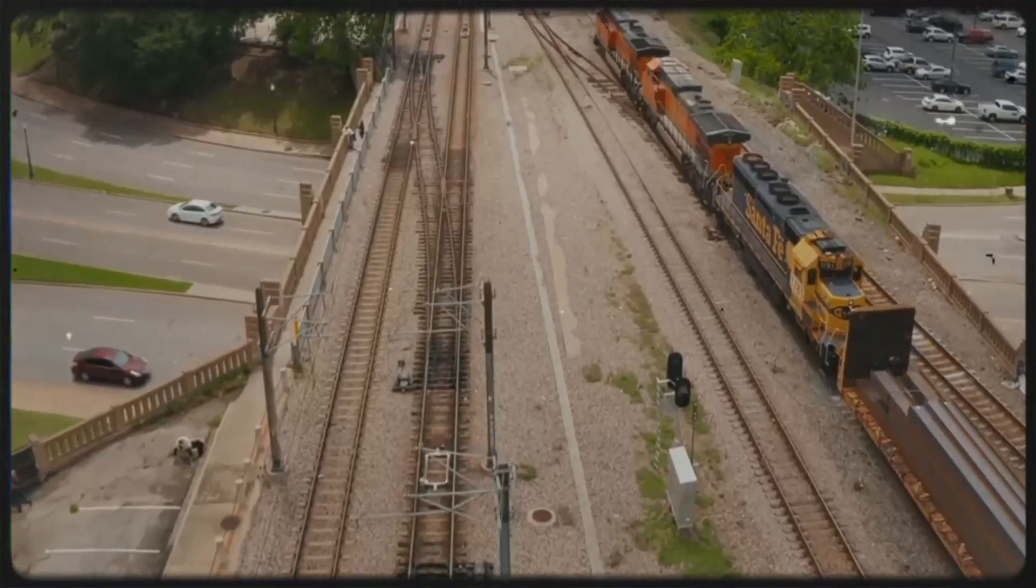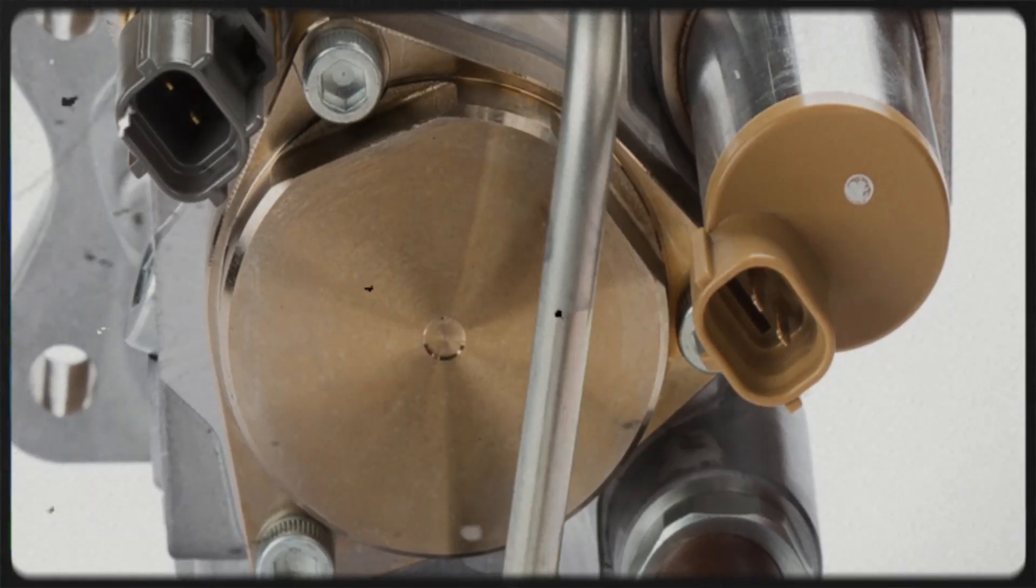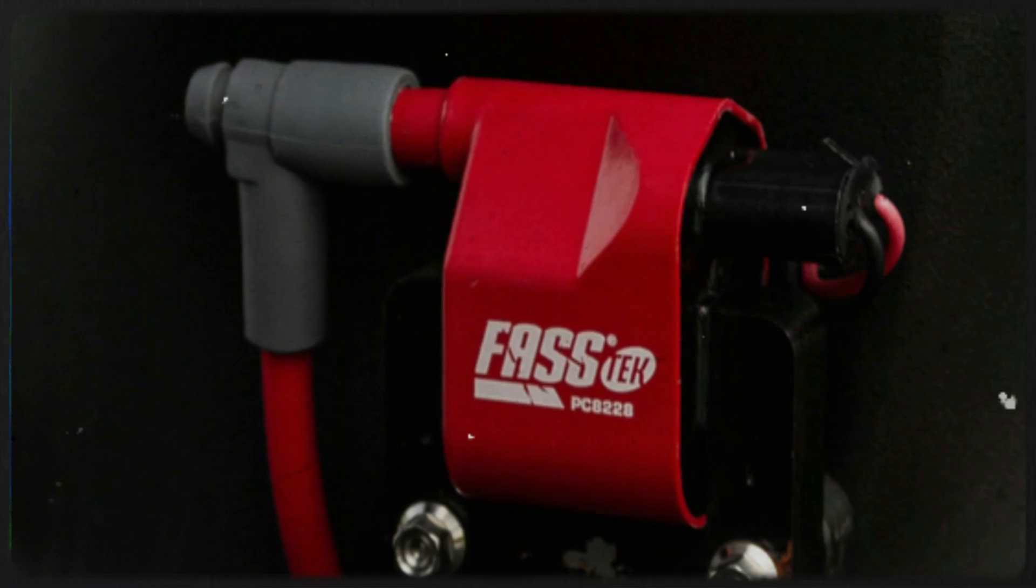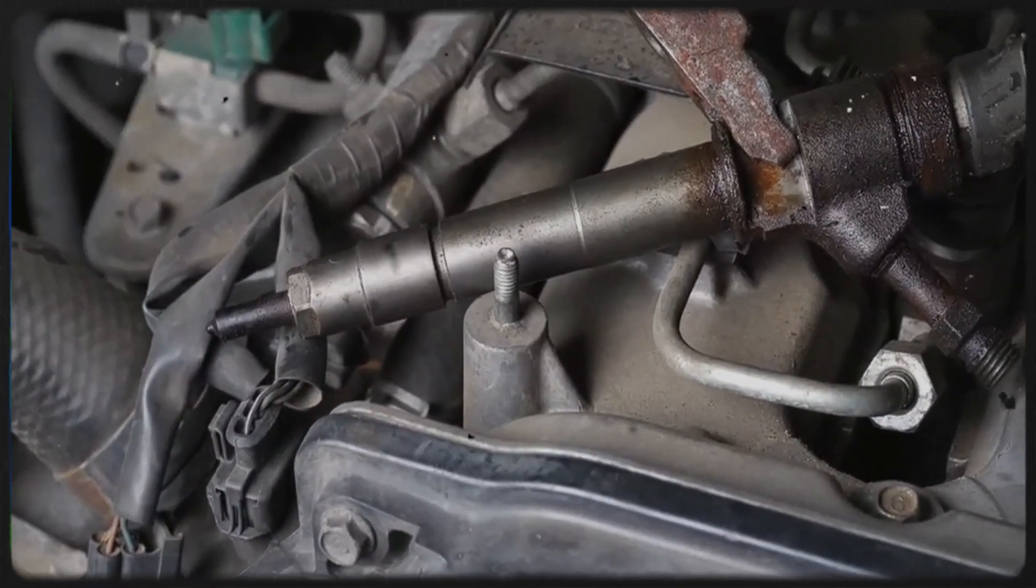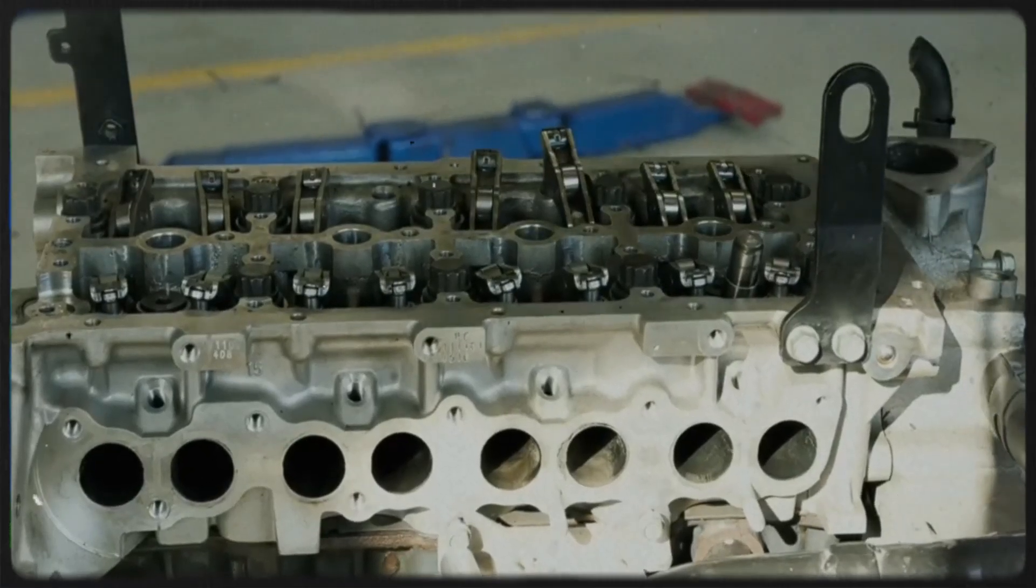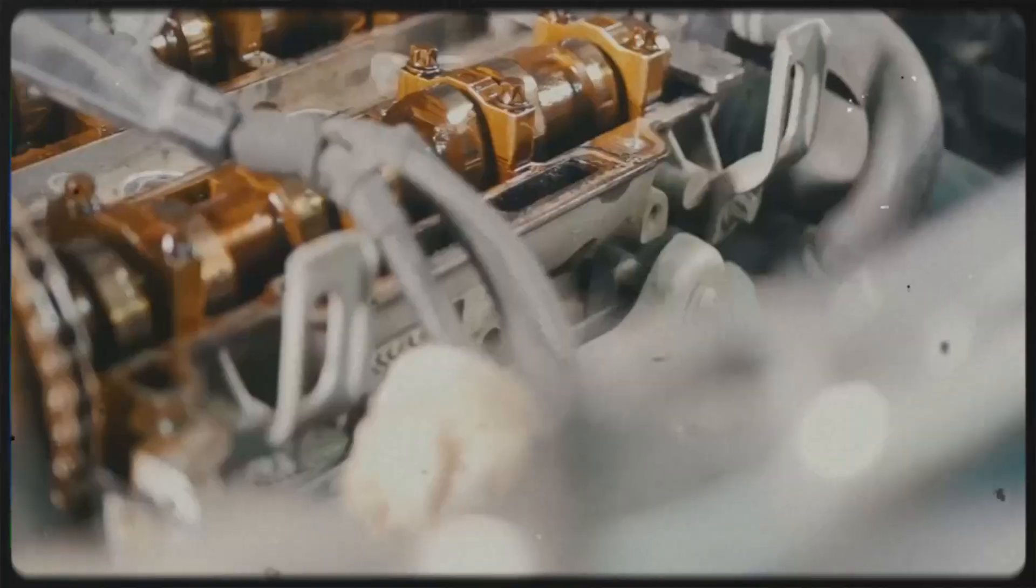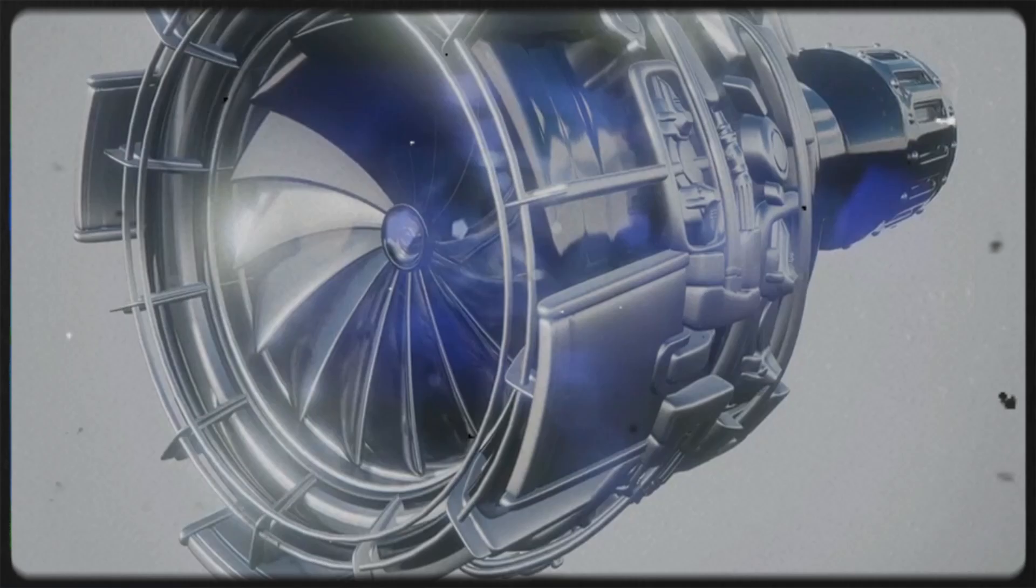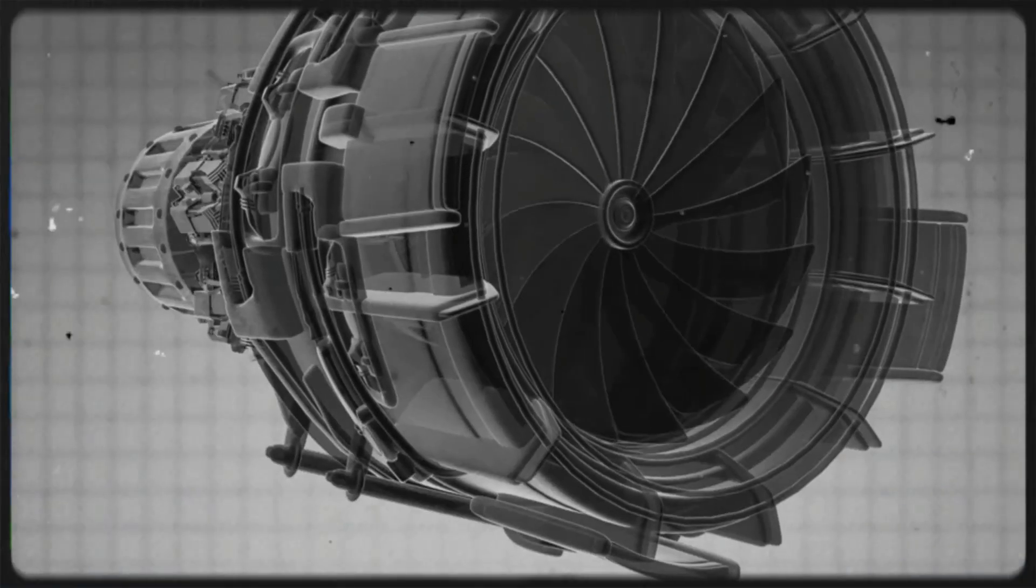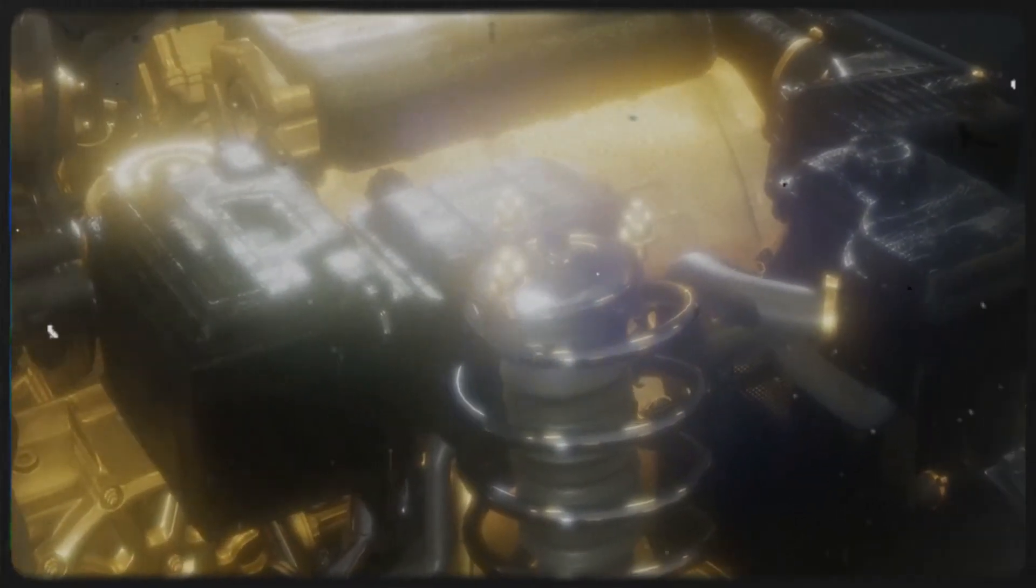This difference in ignition method is huge because it means diesel engines operate under much higher compression ratios compared to gasoline engines. Compression ratio is basically the ratio between the maximum and minimum volume in the cylinder, so how much the air is squeezed before ignition. Diesel engines often have compression ratios ranging from 16 to 1 up to even 20 to 1 in some modern designs, whereas gasoline engines usually run between 8 to 1 and 12 to 1. Higher compression ratios lead to better thermal efficiency, meaning the engine can extract more energy from each drop of fuel.